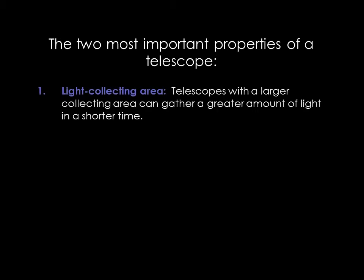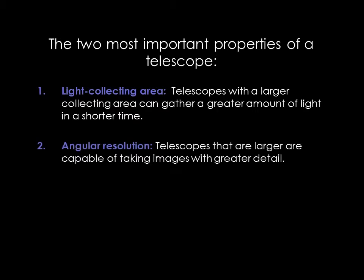The two most important properties of a telescope are the light collecting area and the angular resolution. Telescopes with a larger collecting area can gather a greater amount of light in a shorter time, and telescopes that are larger are capable of taking images with greater detail.